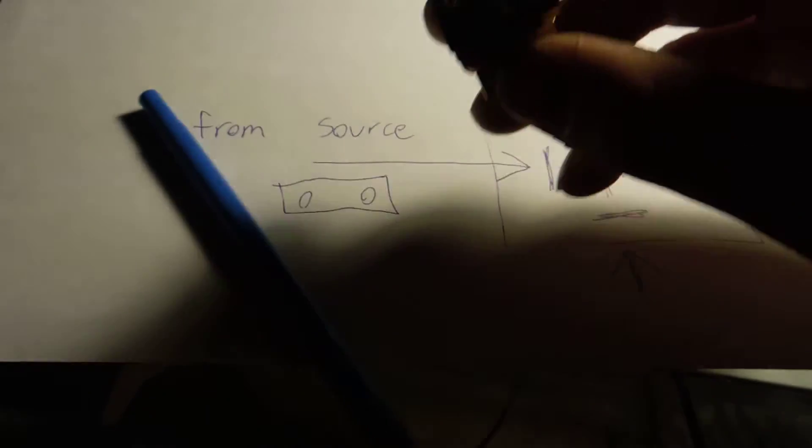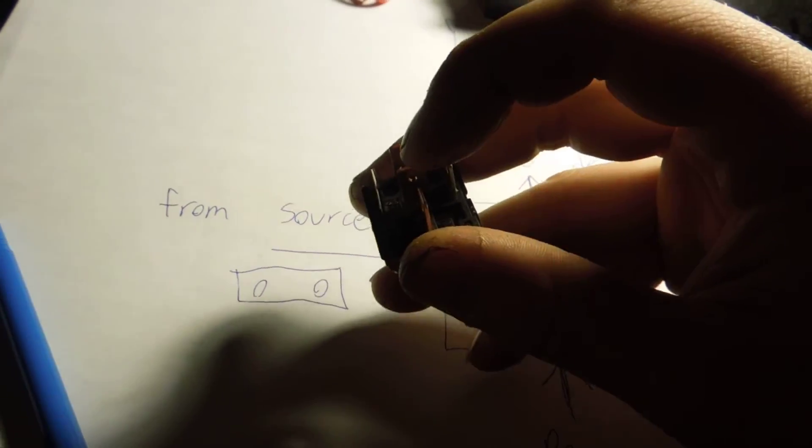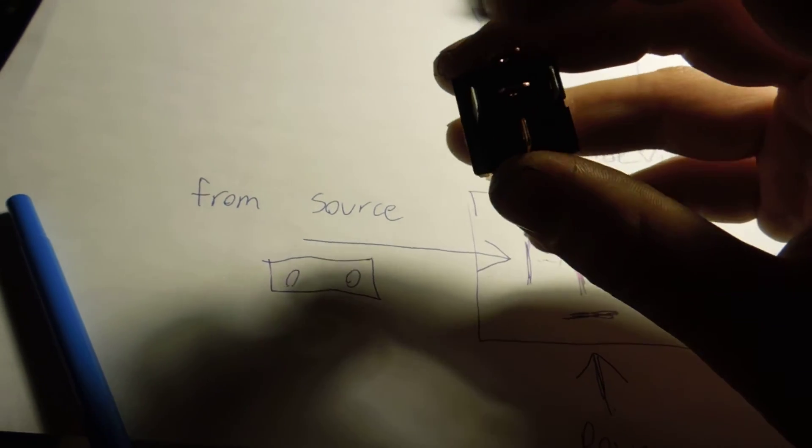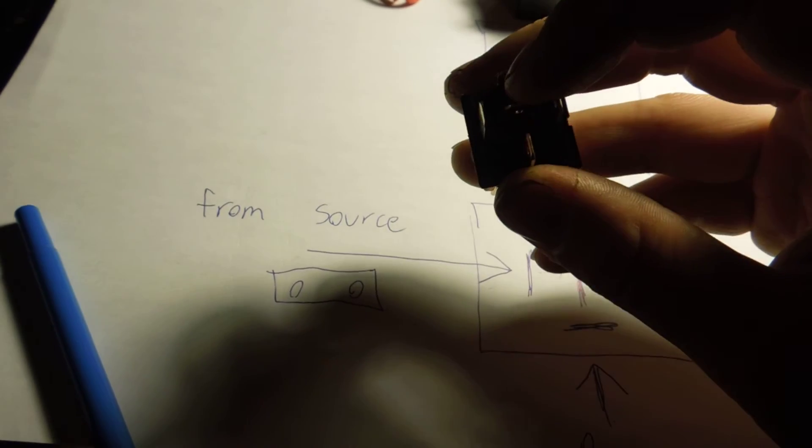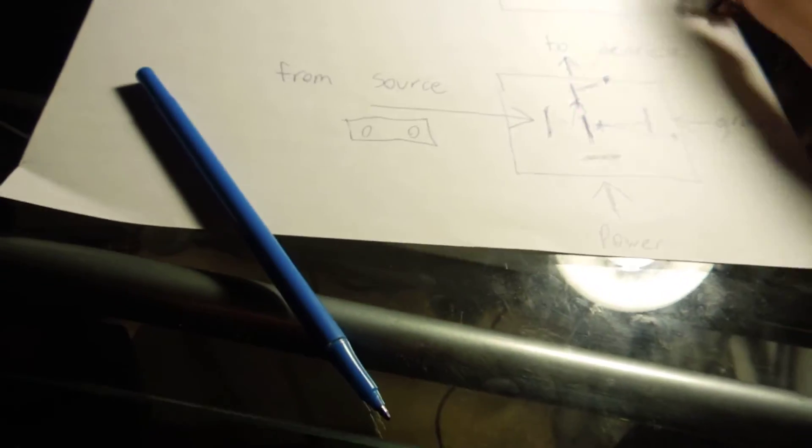And then when the relay is actually in use, the source sends power through there, or it goes to ground—it switches over to here, and the center pin is no longer active, and this pin is active.